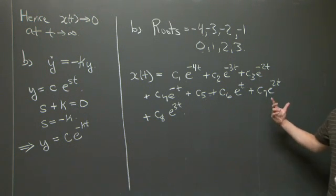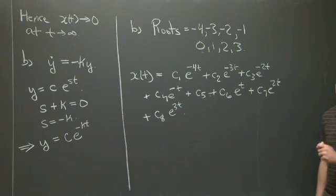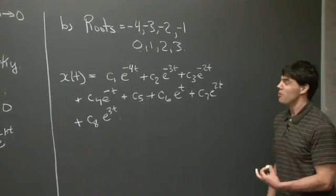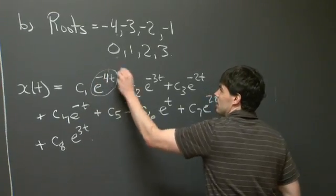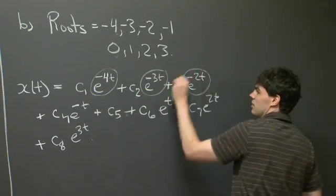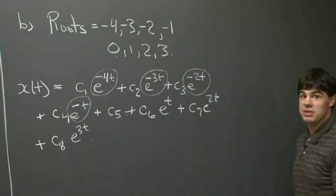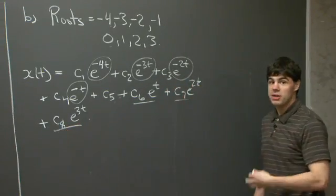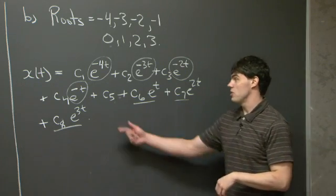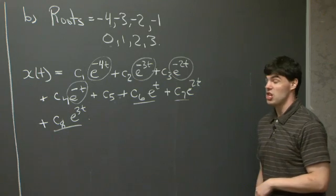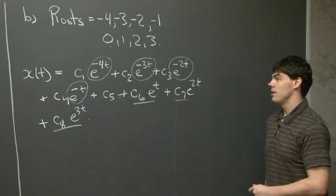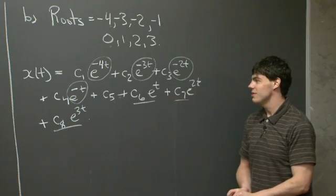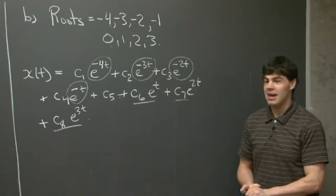The solution has eight terms and eight constants. Just for fun, we can ask: does every solution to this differential equation go to 0 as t goes to infinity? The answer is no. Although each term with a negative root does go to 0 as t goes to infinity, there are three terms that go to positive infinity as t goes to infinity, and one term that just stays constant. So in general, as t goes to infinity, these terms become very large and won't go to 0. I'll see you next time.